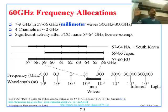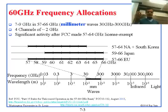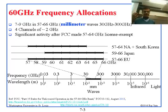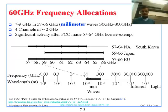They call it 60 gigahertz because it is close to 60. If you want to make a worldwide piece of equipment, you are limited to 59 to 64, which gives about 5 gigahertz. But somehow it works out to four channels of 2 gigahertz each.